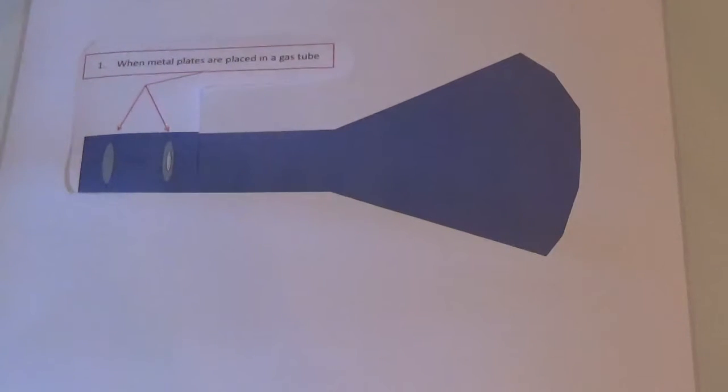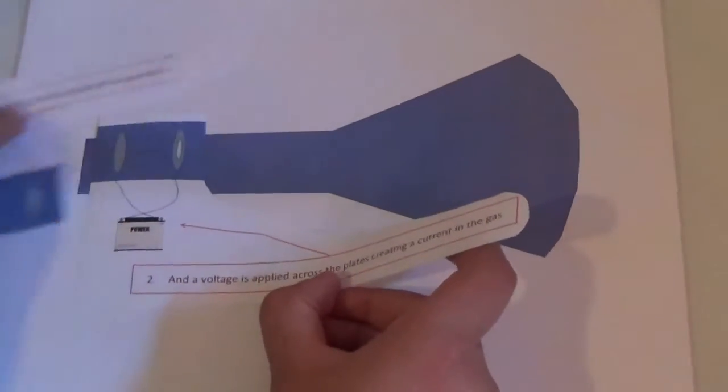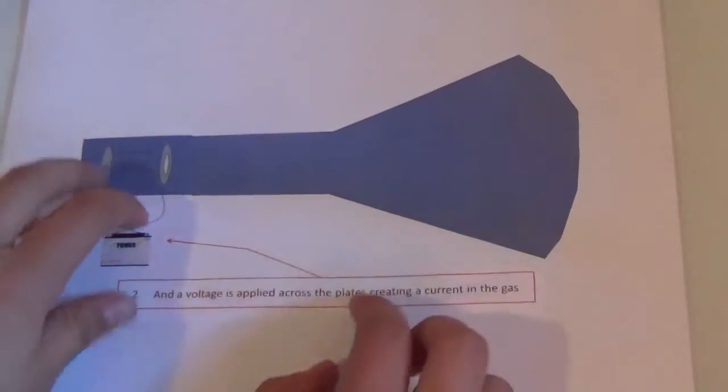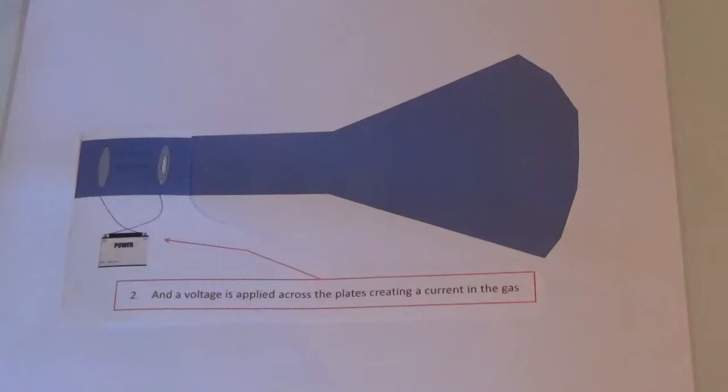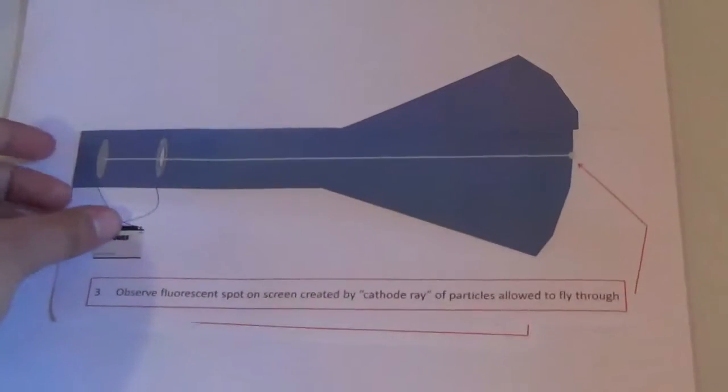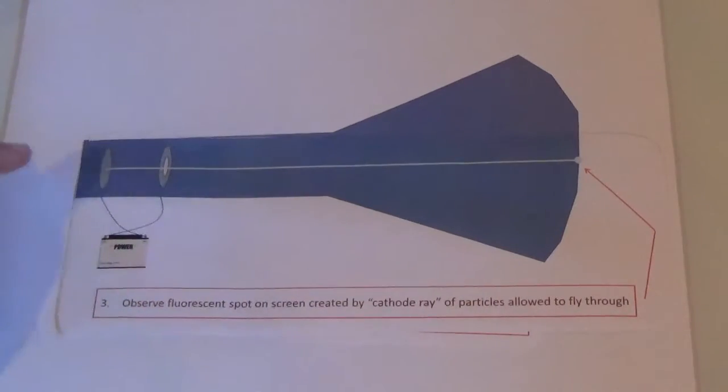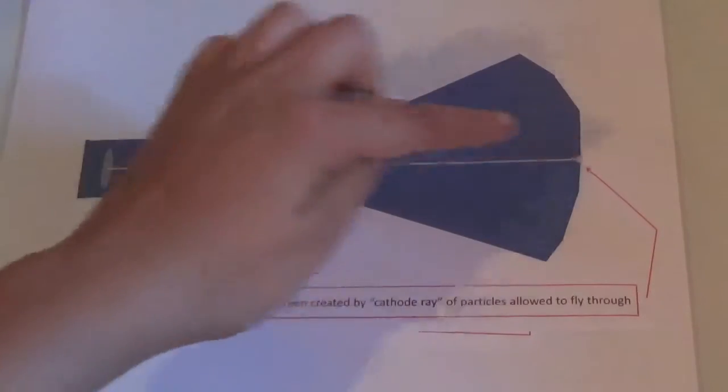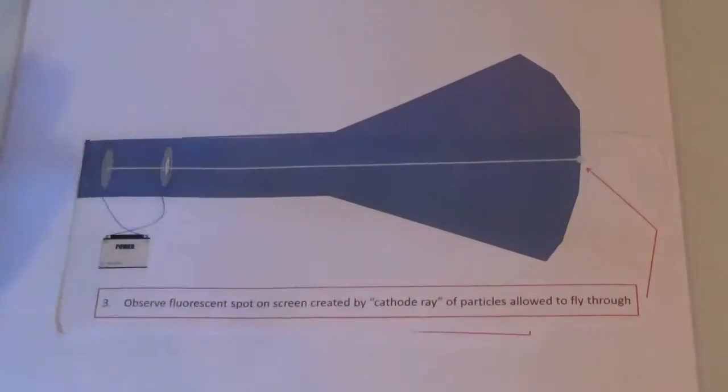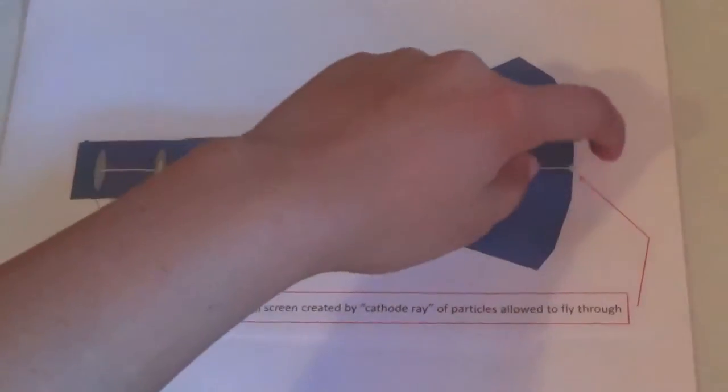When a voltage, such as this one, is applied across the plates, a current in the gas is created. This current creates a ray, the cathode ray, of particles allowed to fly through making a fluorescent spot at this end.